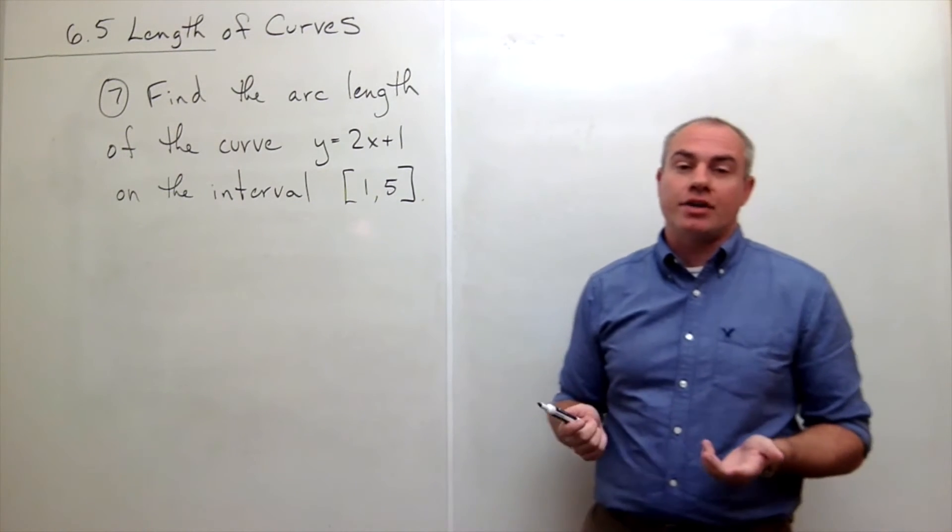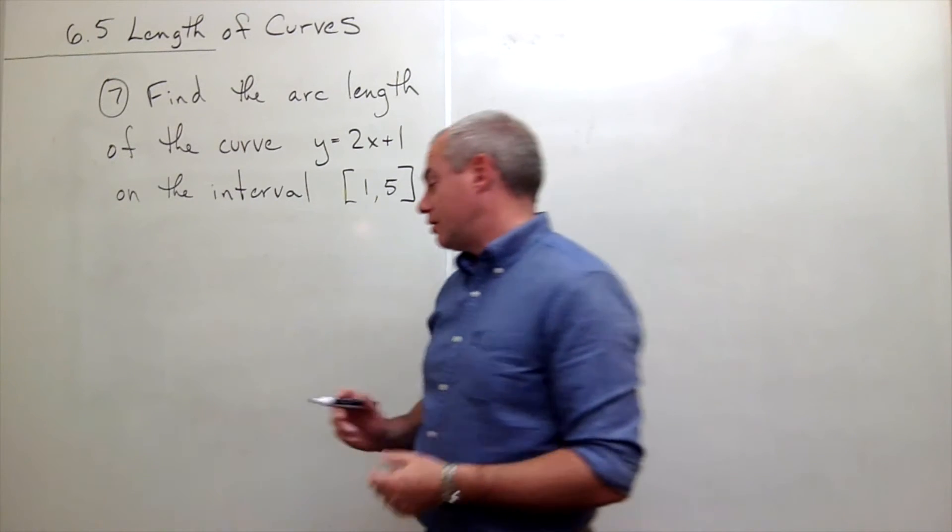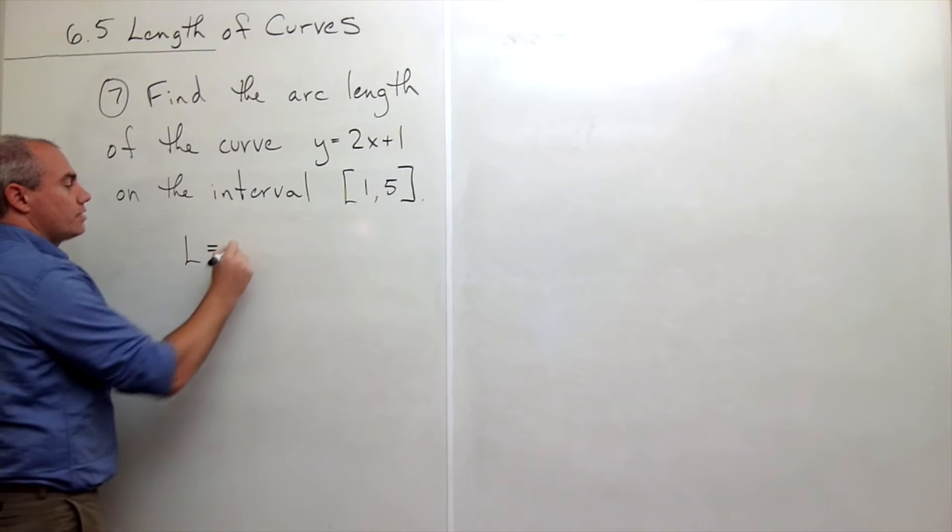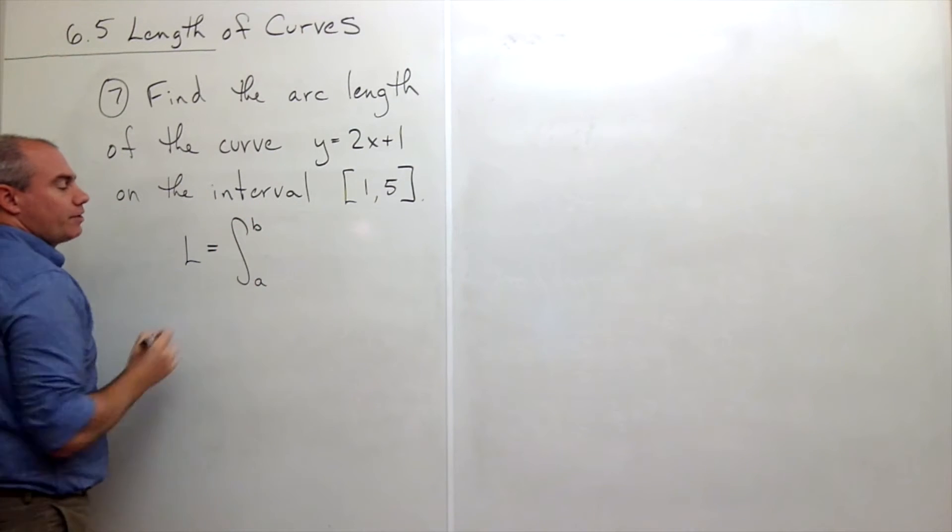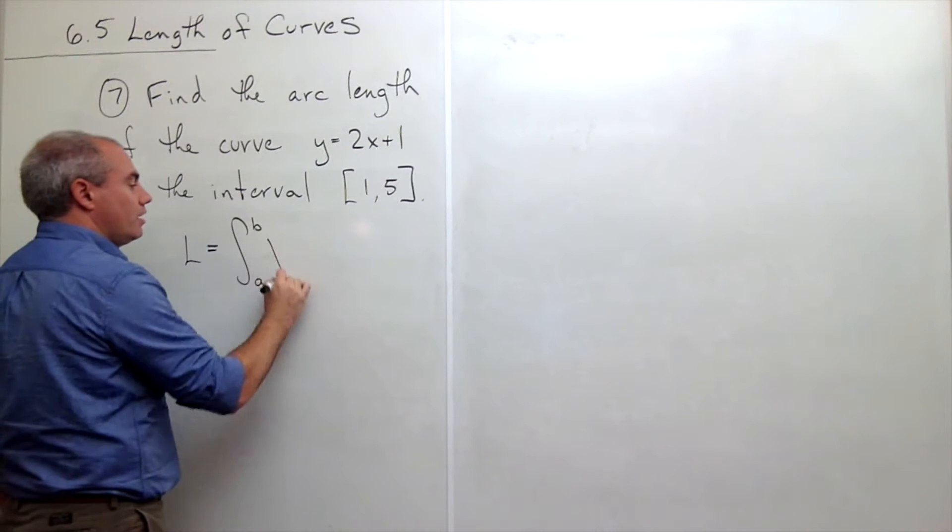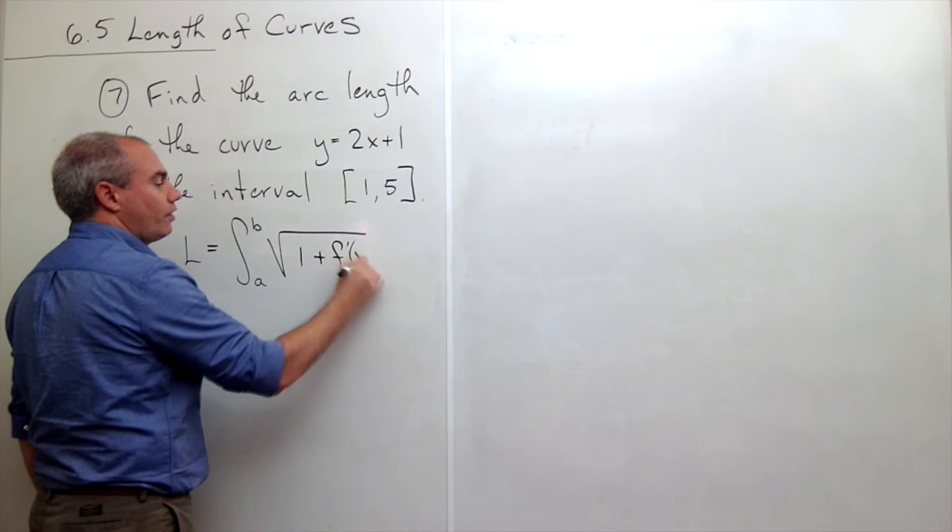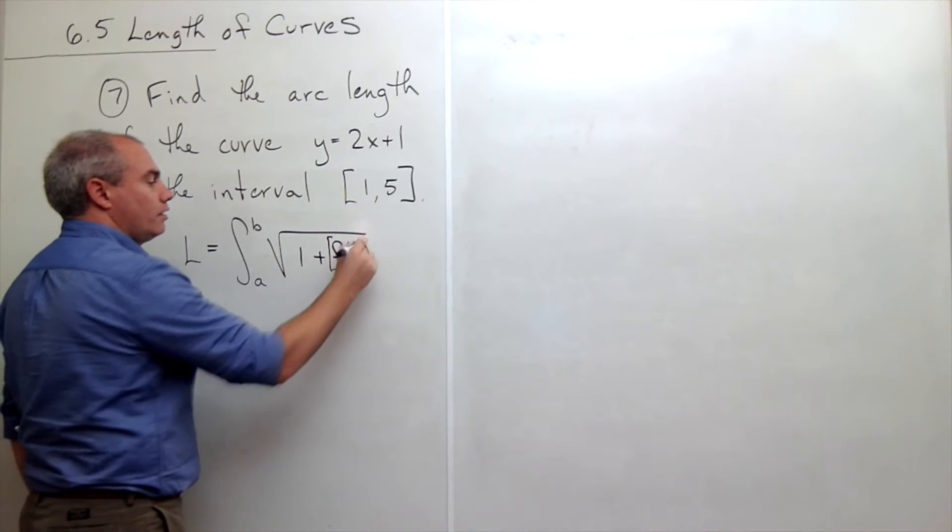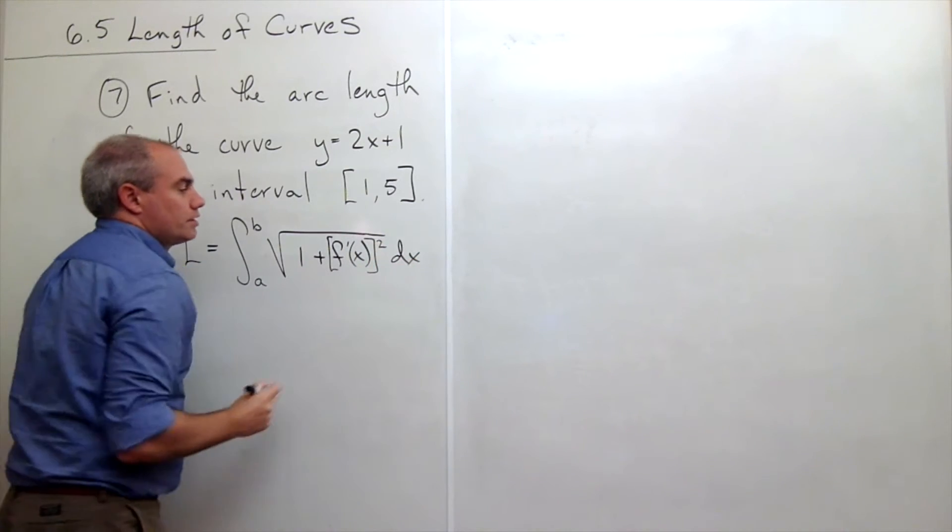Let's remind ourselves what is the formula for arc length. The formula for arc length is the integral from a to b of the square root of 1 plus the derivative of f(x) squared dx. So the function I'm trying to find the arc length of squared dx.